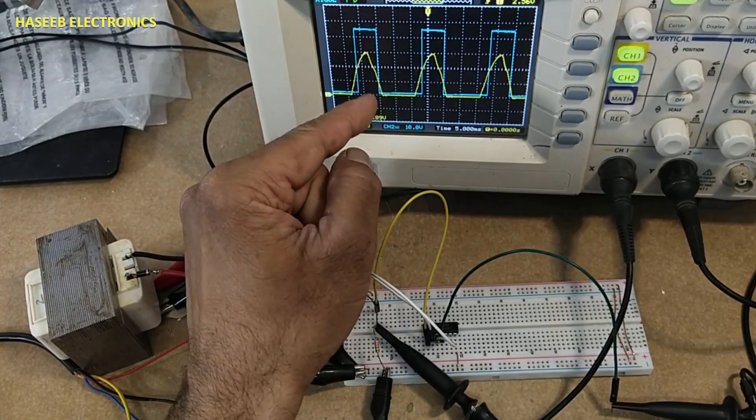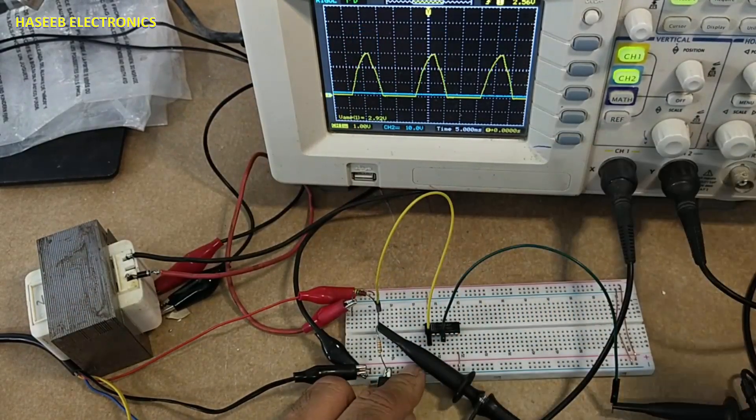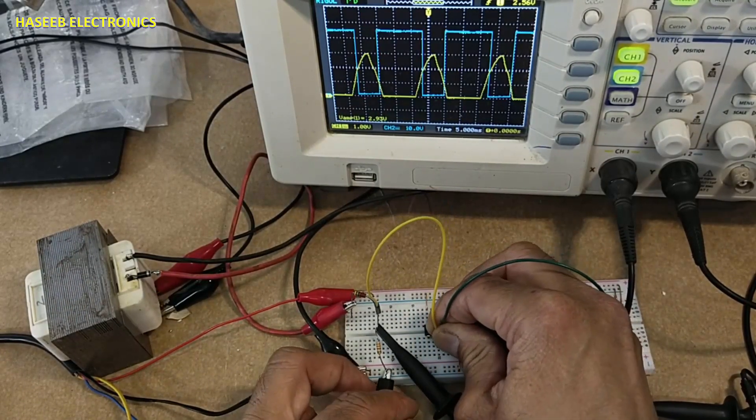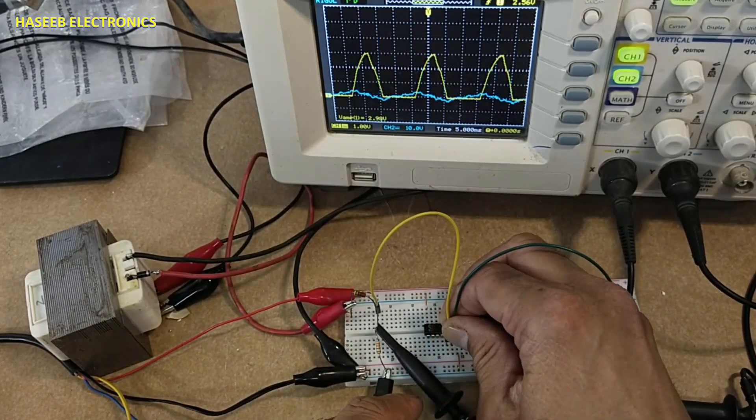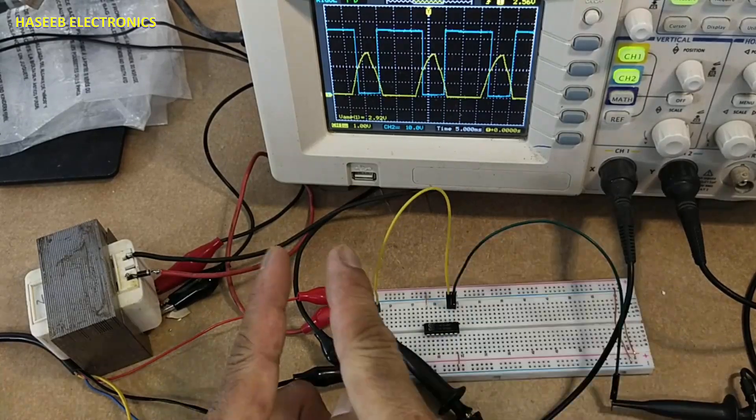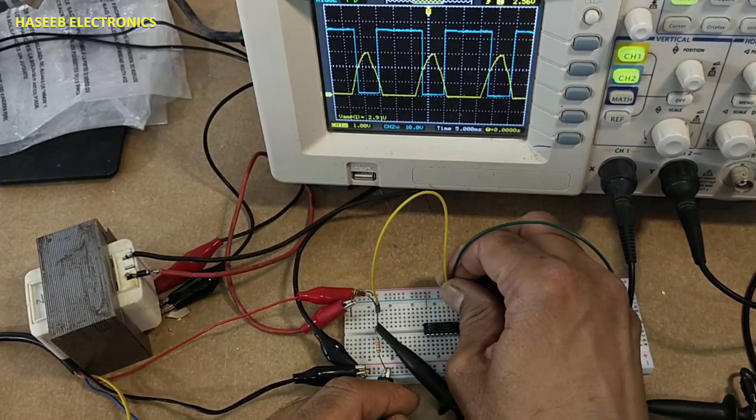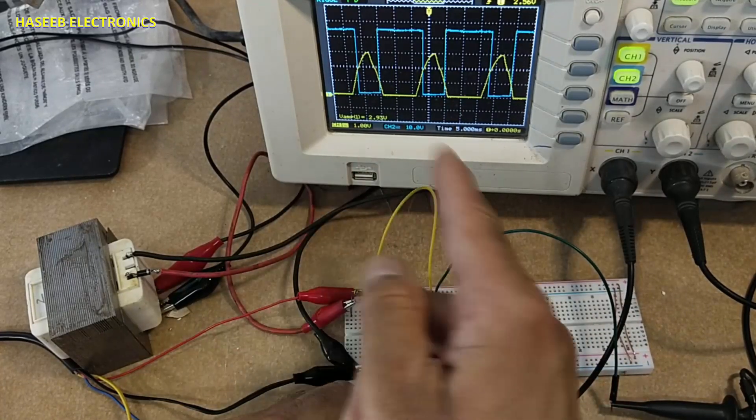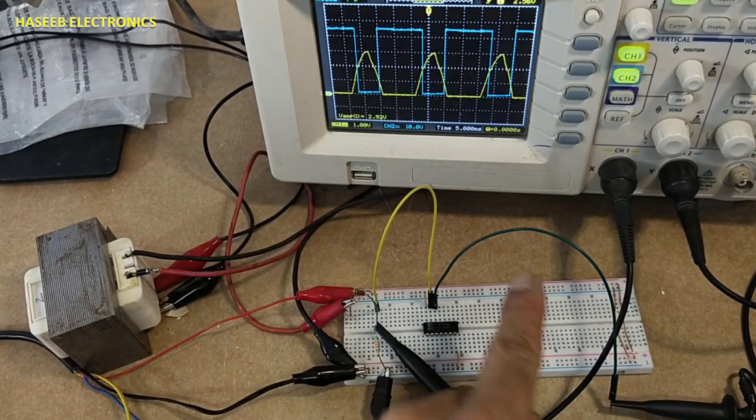So this is Schmidt trigger response. Now I will take output from pin number 1 and 2, the second gate 3 and 4 second inverter, inverter 5 and 6 third inverter, 8 and 9 - 9 input, 8 output, 11 input, 10 output, 13 and 12 - pin number 13 input, pin number 12 output.